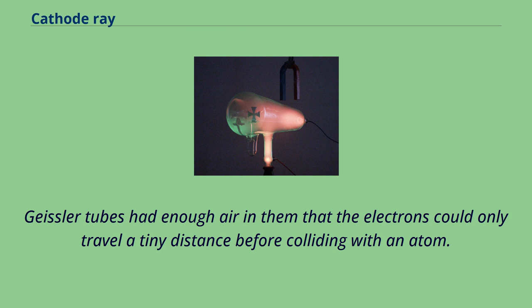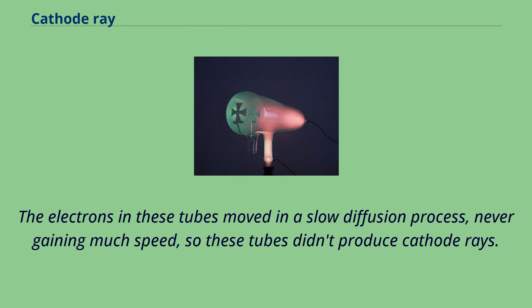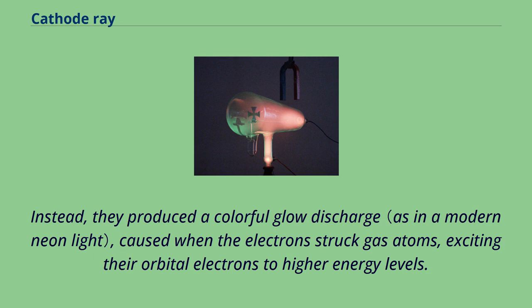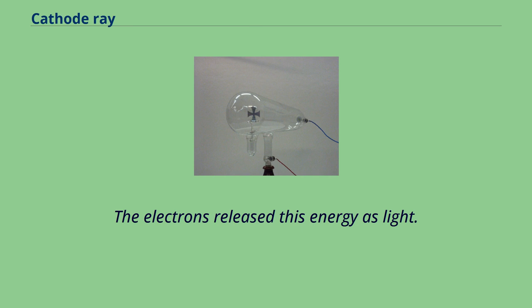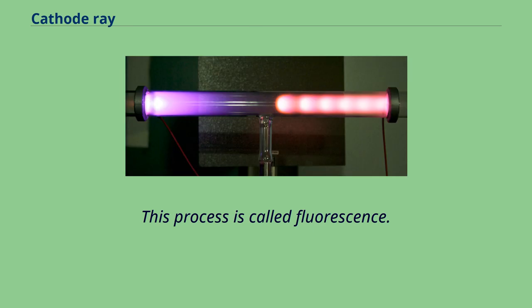Geisler tubes had enough air in them that the electrons could only travel a tiny distance before colliding with an atom. The electrons in these tubes moved in a slow diffusion process, never gaining much speed, so these tubes didn't produce cathode rays. Instead, they produced a colorful glow discharge, caused when the electrons struck gas atoms, exciting their orbital electrons to higher energy levels. The electrons released this energy as light. This process is called fluorescence.